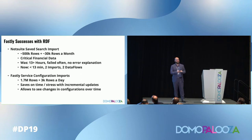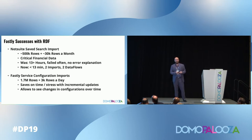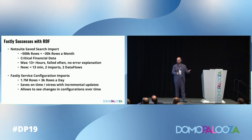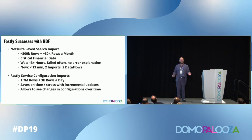Some Fastly successes with recursive data flows: our NetSuite save search import was 500,000 rows, adding 30,000 rows a month, critical financial data that took more than 13 hours and failed often. Now it takes less than 13 minutes using two imports with two data flows. For our service configurations, we had 1.7 million rows adding 3K rows a day — I didn't want to pull in all 1.7 million rows every time. This saves time, reduces stress with incremental updates, and allows us to see configuration changes over time. Sometimes you just need more data, and this is a great way to turn a single point-in-time into ongoing snapshots.